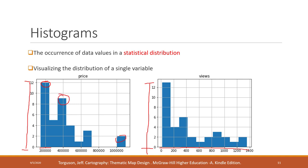Here we can see that most of the prices are in a lower range, and we have two records that have very high prices. We can see similar patterns on the views — most records have fewer views, and there are only several records that have a lot of views. So that is a histogram used to show the distribution of a single variable.